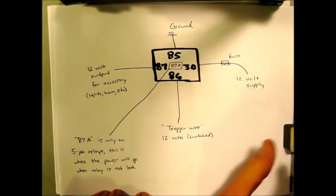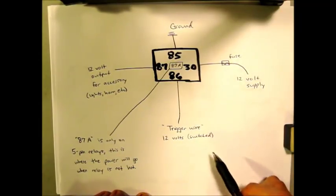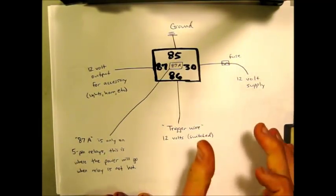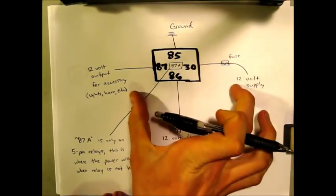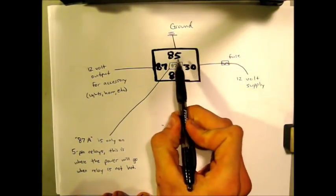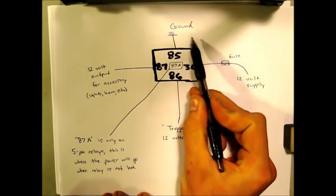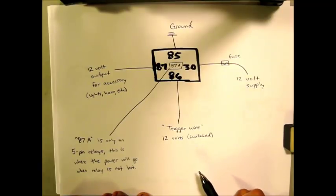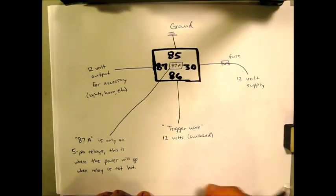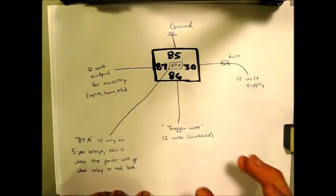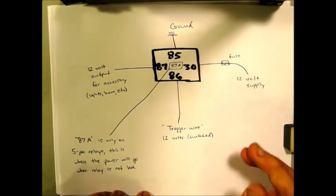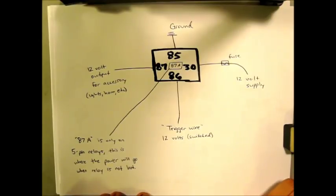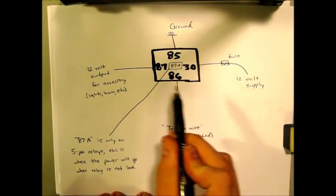Your 85 and 86 are going to be your trigger circuit. That's going to be what tells the switch to close for your bigger circuit. Typically you're going to run your 85 to your ground, and your 86 is going to go to your power - basically to your switched source that you can run with thinner wires into your dash, instead of running your 14 gauge wire that you may need for your accessory, depending on the amperage that it draws.